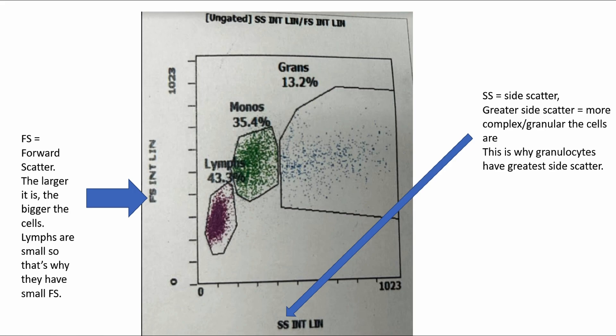What is forward scatter, side scatter, you say? Great question. Forward scatter determines how, the greater the forward scatter, the larger the cells. So lymphs are small compared to granulocytes, monocytes, and that's why they have small forward scatter.